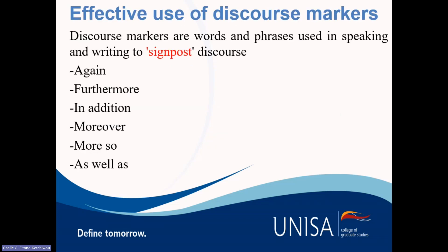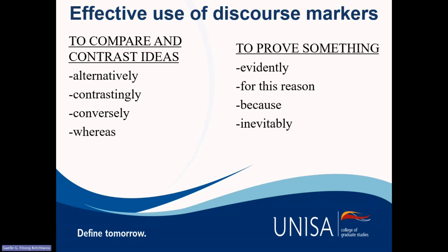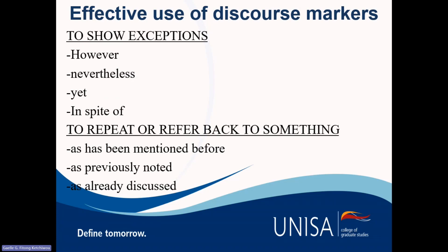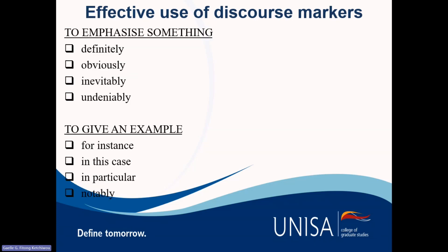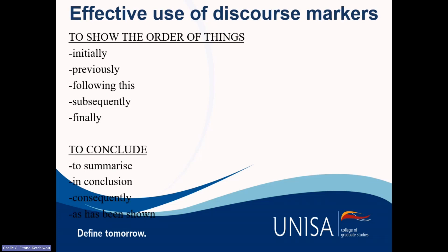Some of these discourse markers have already been touched on, and some are additional. When you want to compare or contrast ideas, prove something, show exceptions, repeat or refer back to something, emphasize something, or give examples, these discourse markers can help you. To show order: initially, previously, following this, subsequently, finally. To conclude or summarize: in conclusion, consequently, as it has been shown.